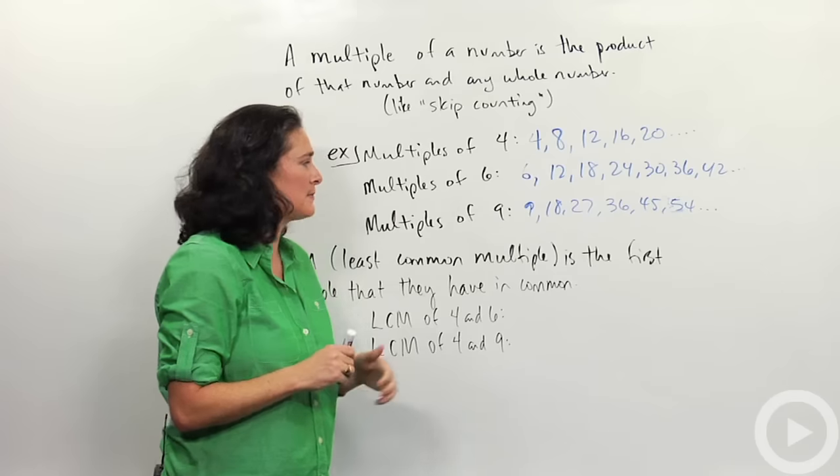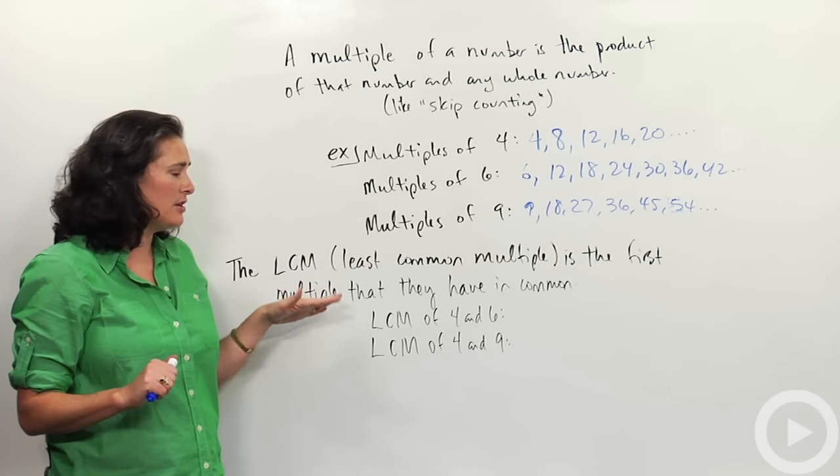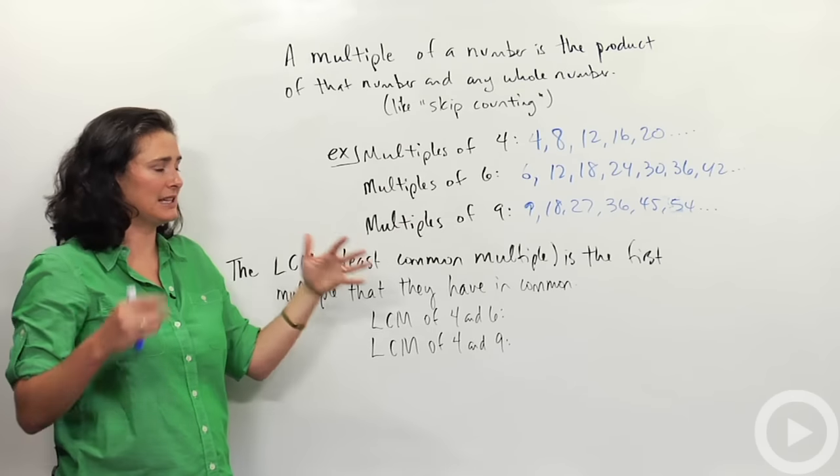Okay. So that's how you list multiples. If I want to find an LCM, or the least common multiple, it's the first multiple that they have in common. The first number in this list that they have in common.